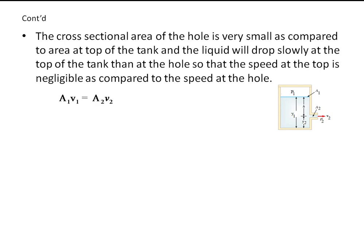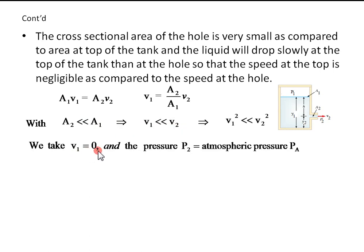A1 V1 equals A2 V2, and from this V1 equals A2 over A1 times V2. But with A2 less than A1, then we get V1 less than V2. So we take V1 to be 0.